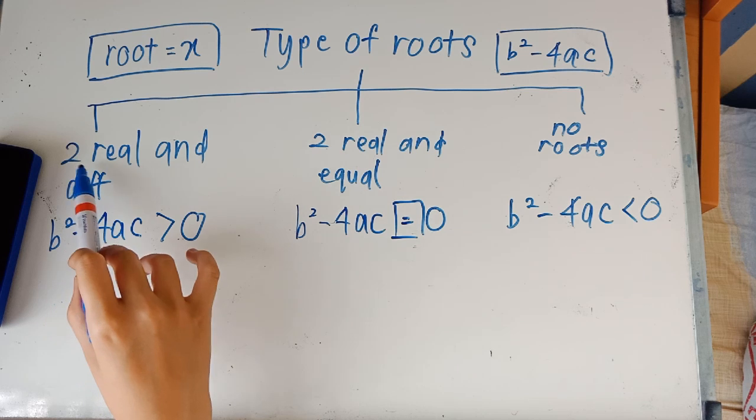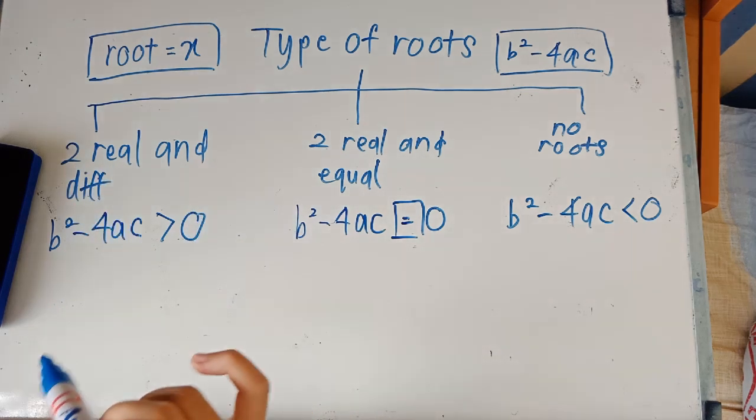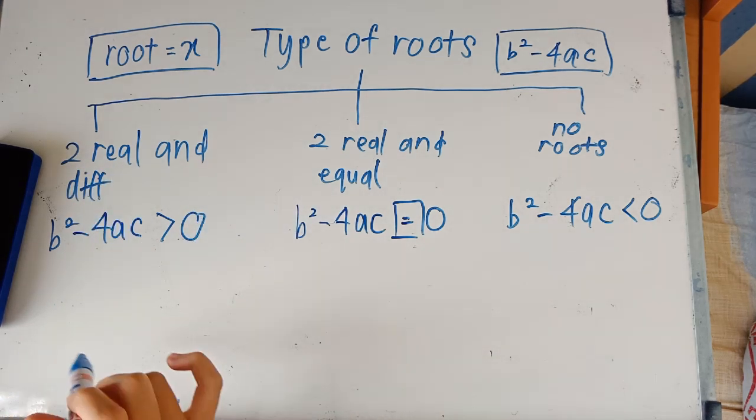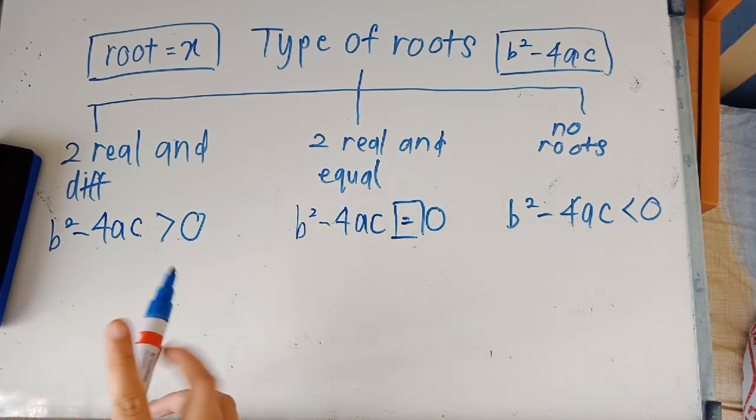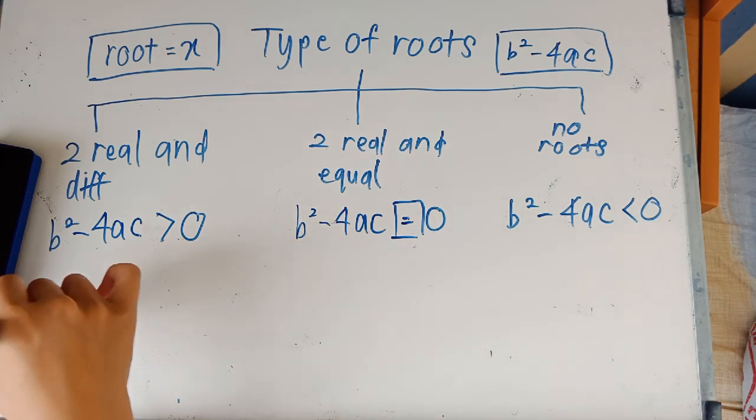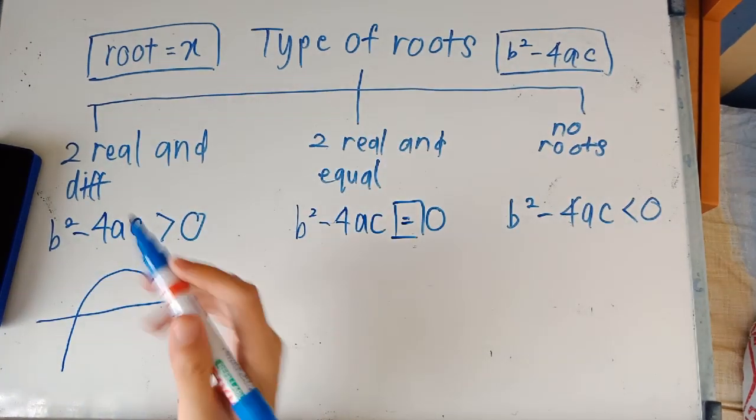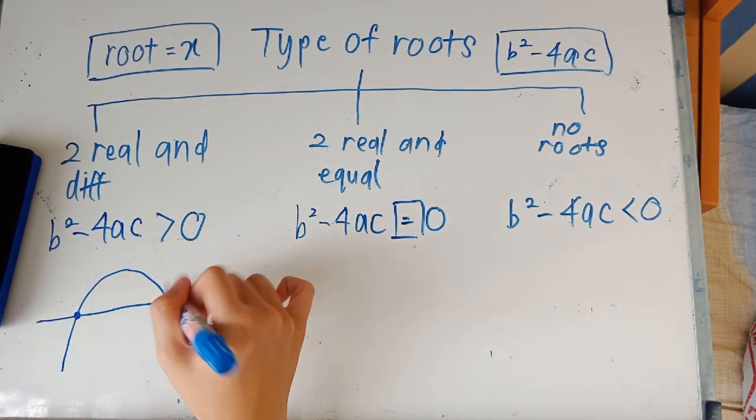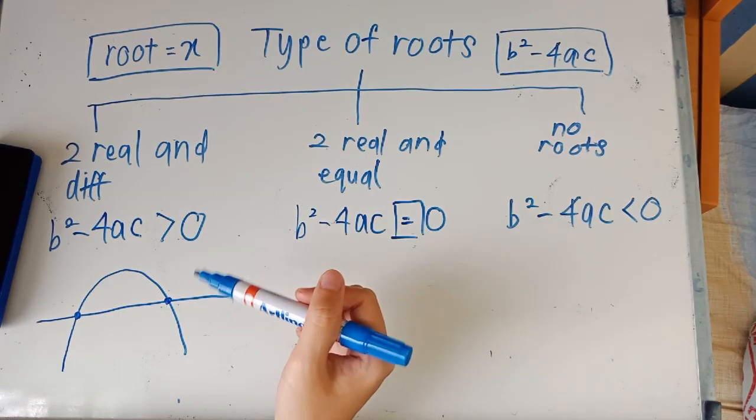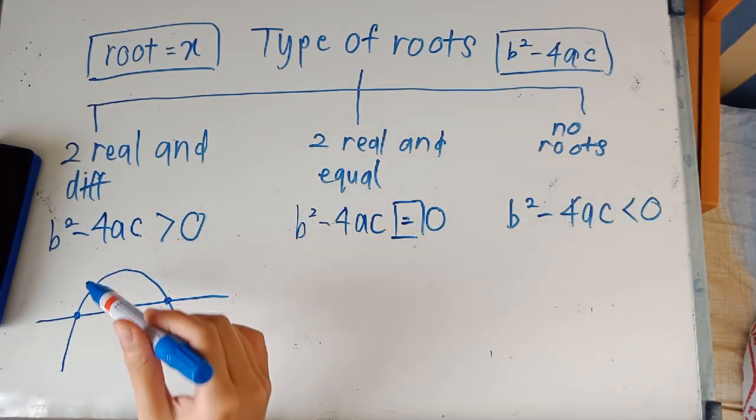the graph will intersect the x or y axis at two different points. So an example would be this. And this would be a graph. So it intersects at two different points. Therefore, it is real and different roots.